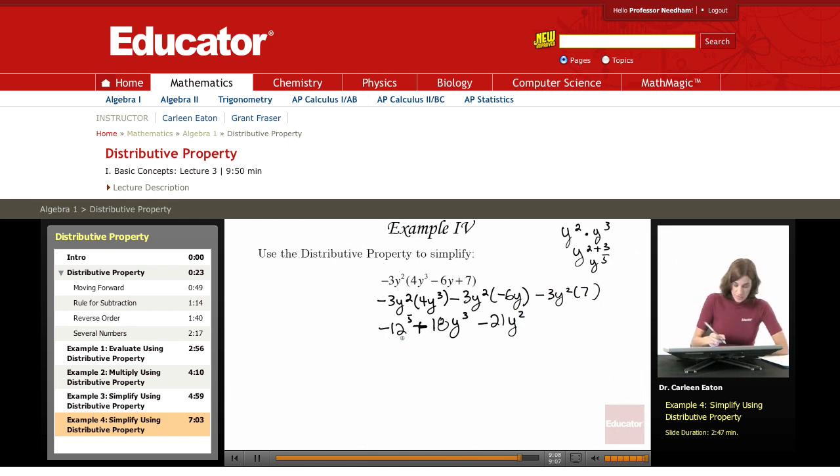The final answer is negative 12y to the 5th plus 18y cubed minus 21y squared.